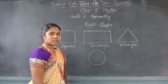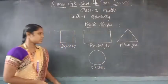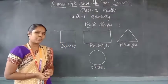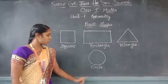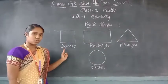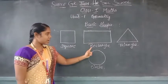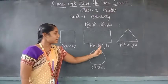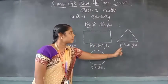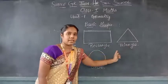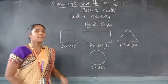And the name of this shape is circle — C-I-R-C-L-E, circle. Now let us say the names of the shapes again: square, rectangle, triangle, circle. Square — S-Q-U-A-R-E. Rectangle — R-E-C-T-A-N-G-L-E. Triangle — T-R-I-A-N-G-L-E. Circle — C-I-R-C-L-E.